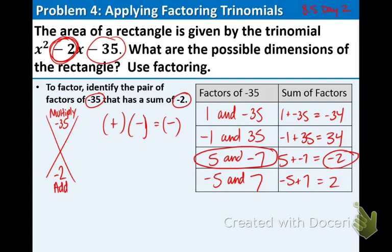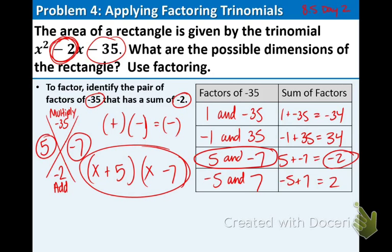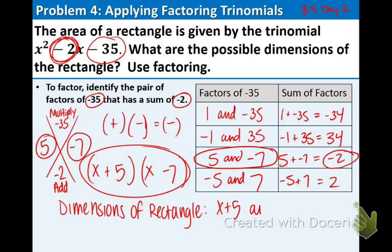Take those two numbers, put a set of parentheses down. The variable that is in this problem is x. And then we're just going to rewrite the 5 and the negative 7. So those are the numbers that work. And our dimensions of this rectangle are x plus 5 and x minus 7, which are the numbers that we got right here. And that completes example 4.